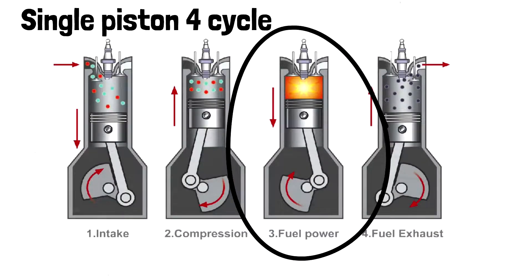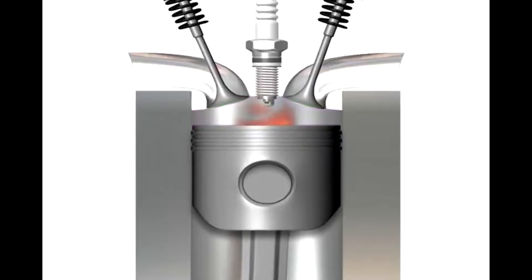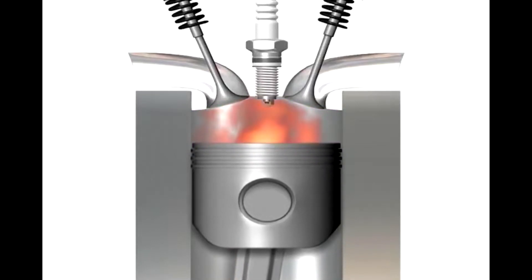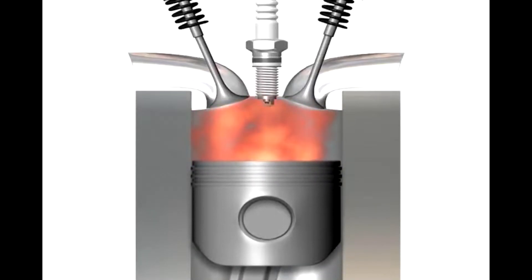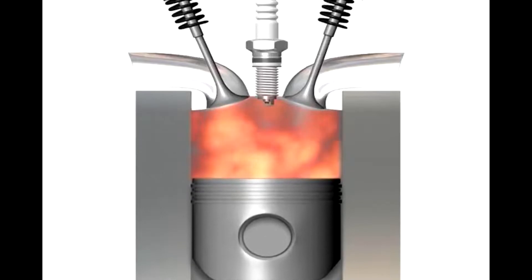Then, the power stroke. An electrical spark ignites the compressed fuel and air mixture and the resulting combustion forces the piston to the bottom of the cylinder again.